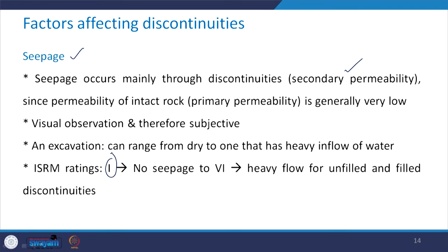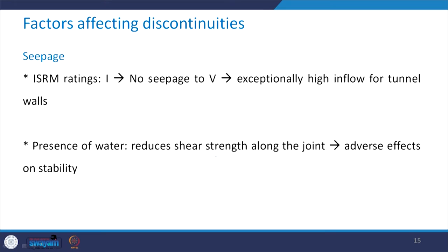An excavation can range from completely dry to one that has heavy inflow of water. ISRM has given ratings: rating 1 for no seepage to rating 6 for heavy flow, for both unfilled and filled discontinuities. For tunnels, the ISRM rating is 1 for no seepage and 5 for exceptionally high inflow for tunnel walls. The presence of water reduces shear strength along the joint and has an adverse effect on the stability of any structure — tunnel, slope, or foundations.